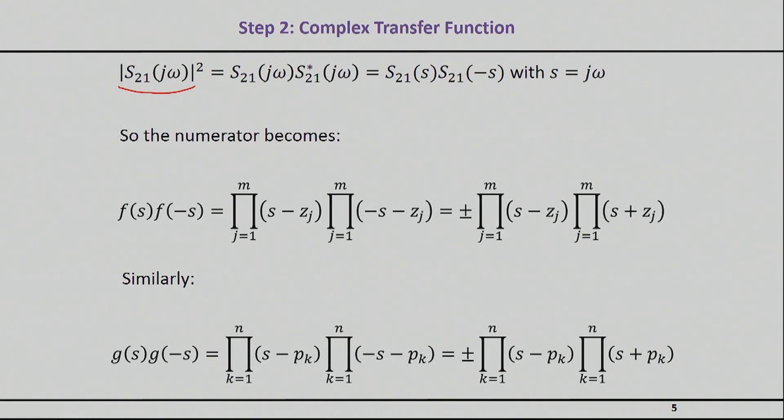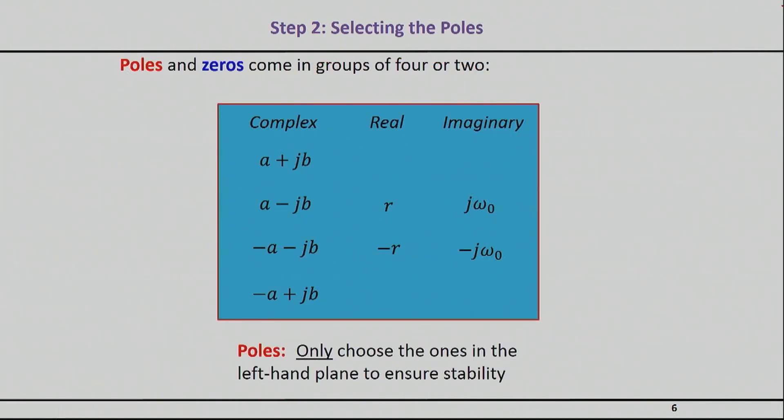So the easiest way to do that is to basically write the magnitude as S21 multiplied with S21 complex conjugate, and then you analytically extend that in the S domain. The analytical extension is by writing down that S is equal to J omega, and therefore the complex conjugate here is realized by replacing J with negative J, which in the analytical continuation means you replace S with negative S. So if that's the case, then your numerator, which is written here, basically will be multiplication of the original F with the F of negative S, and similarly you will have a very similar expression for the denominator. This is just math showing how the expressions become once J omega is replaced by S.